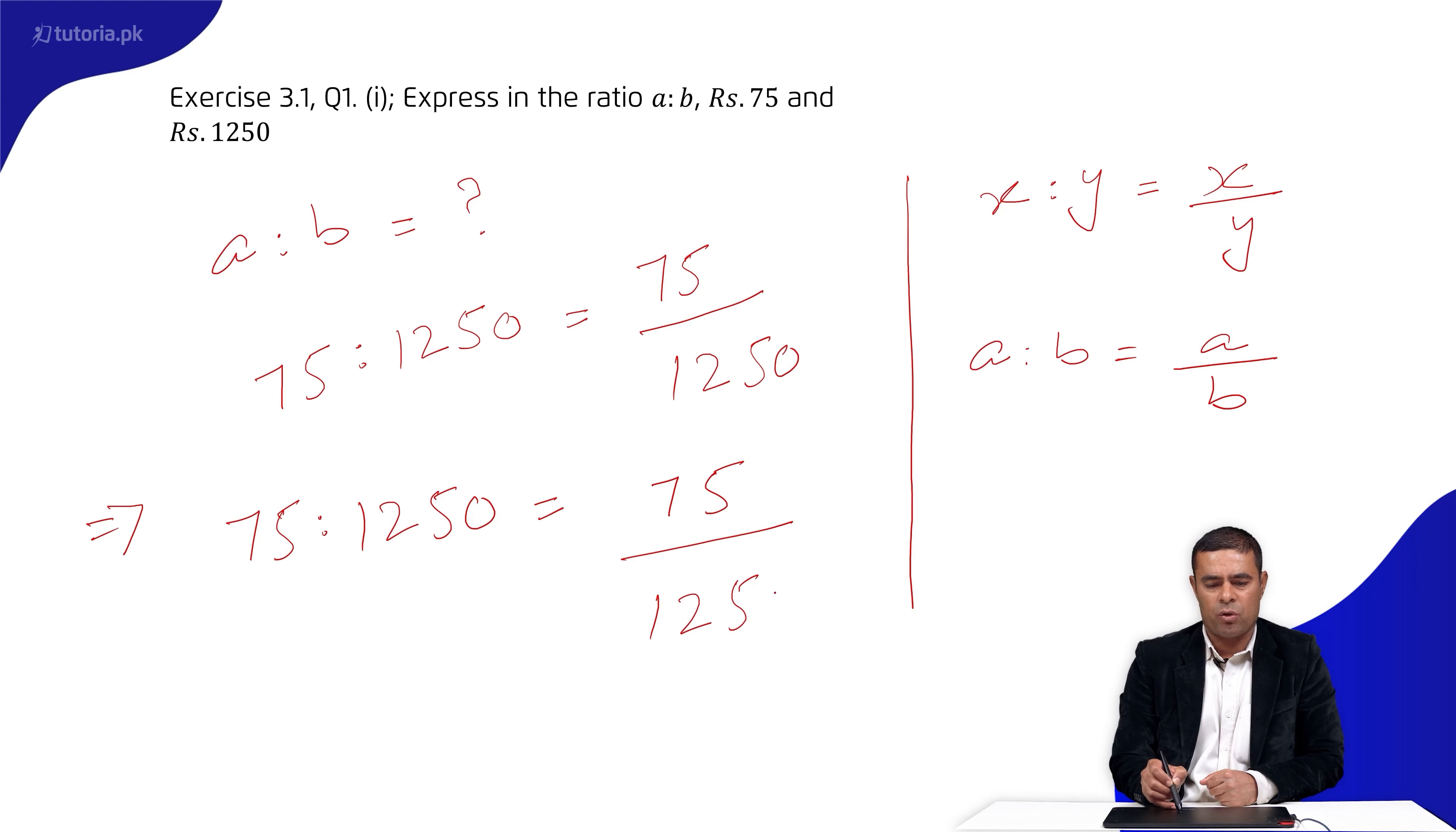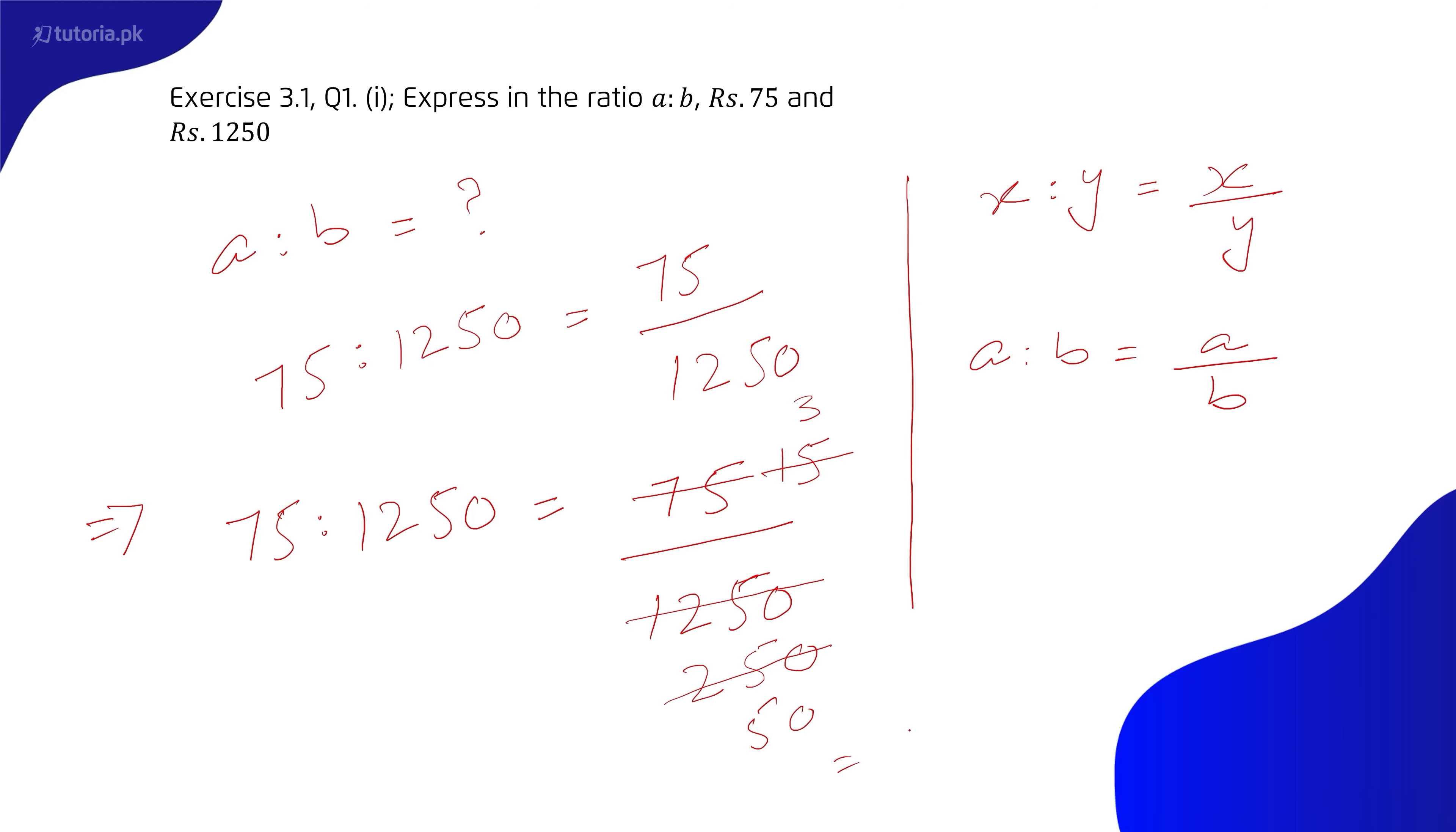Using 5's table for cancellation, we get 15 over 250, then 3 over 50. So the answer is 3 ratio 50. We converted from ratio form to fraction form, simplified it, and got the result.